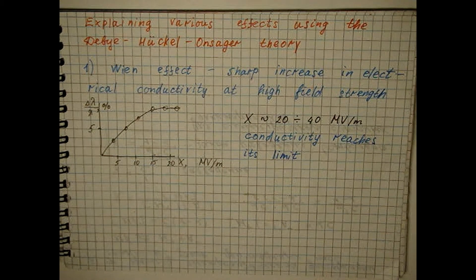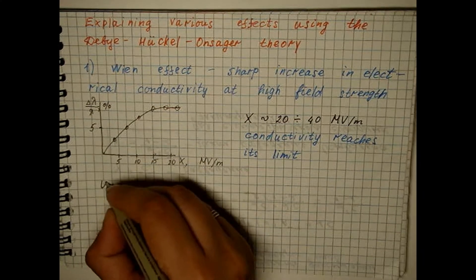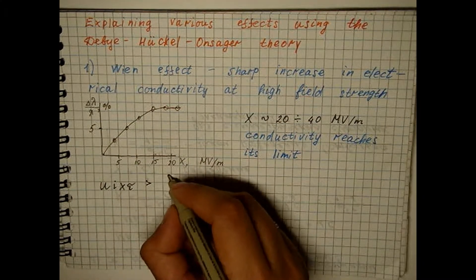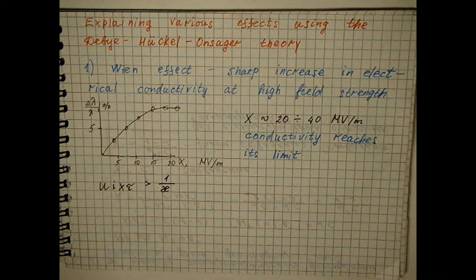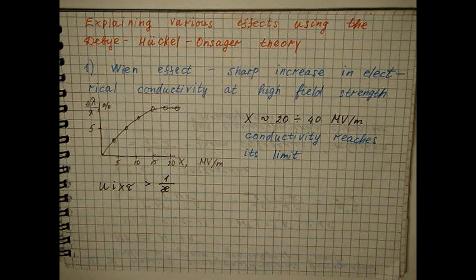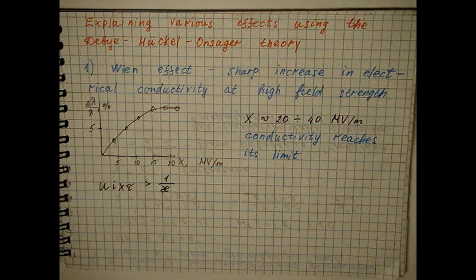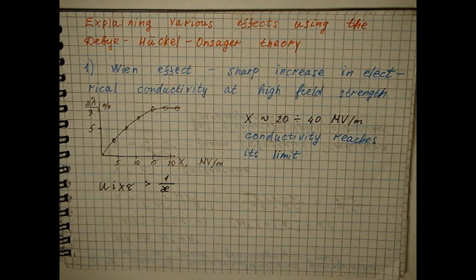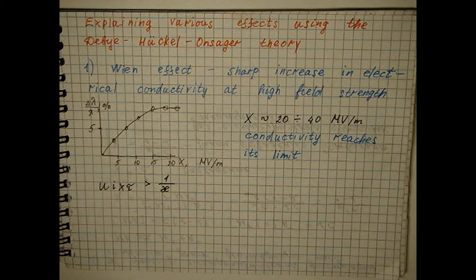Based on the ratio, we can calculate the field strength at which an increase in electrical conductivity should be expected. The calculation leads exactly to those values of the field strength at which the Wien effect is observed.